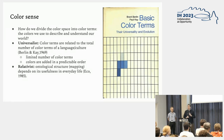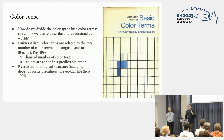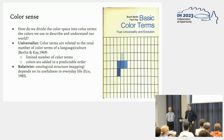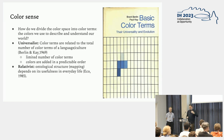There have basically been two main schools in answering this question. We have the universalist approach, mostly represented by the work of Berlin and Kay from 1969, who put forward a universalist and evolutionary approach. They say color terms are related to the total number of color terms that a society, a language, and culture have. These are always limited. If a society develops and becomes more complex, then color terms are added in a predictable order.